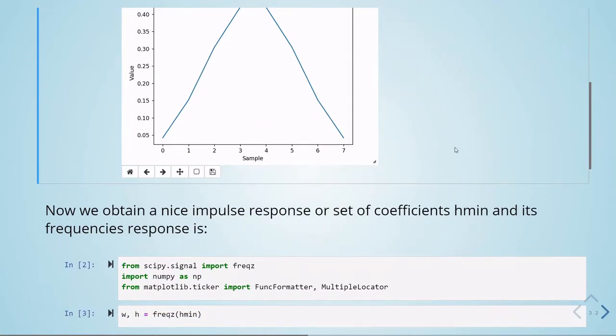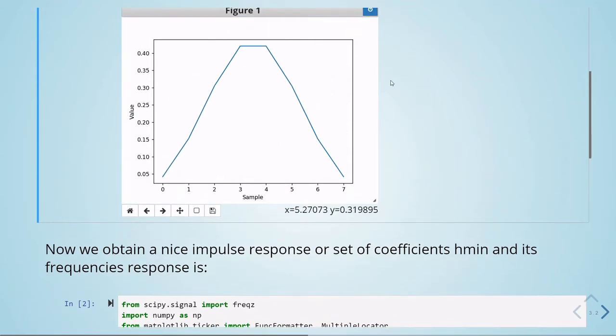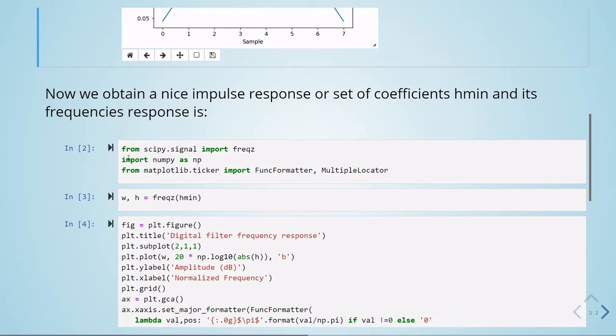So we can obtain a nice impulse response or set of coefficients, and then we can see what's the frequency response of this impulse response. So now we are importing the freqz function from scipy signal. We're importing numpy as np.